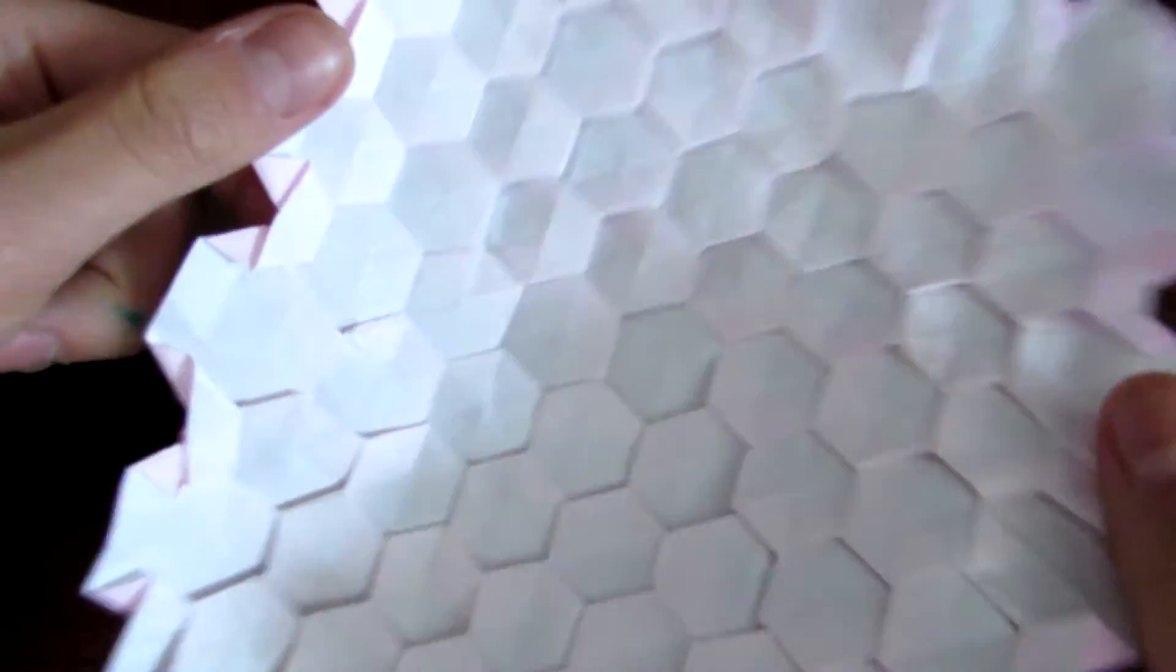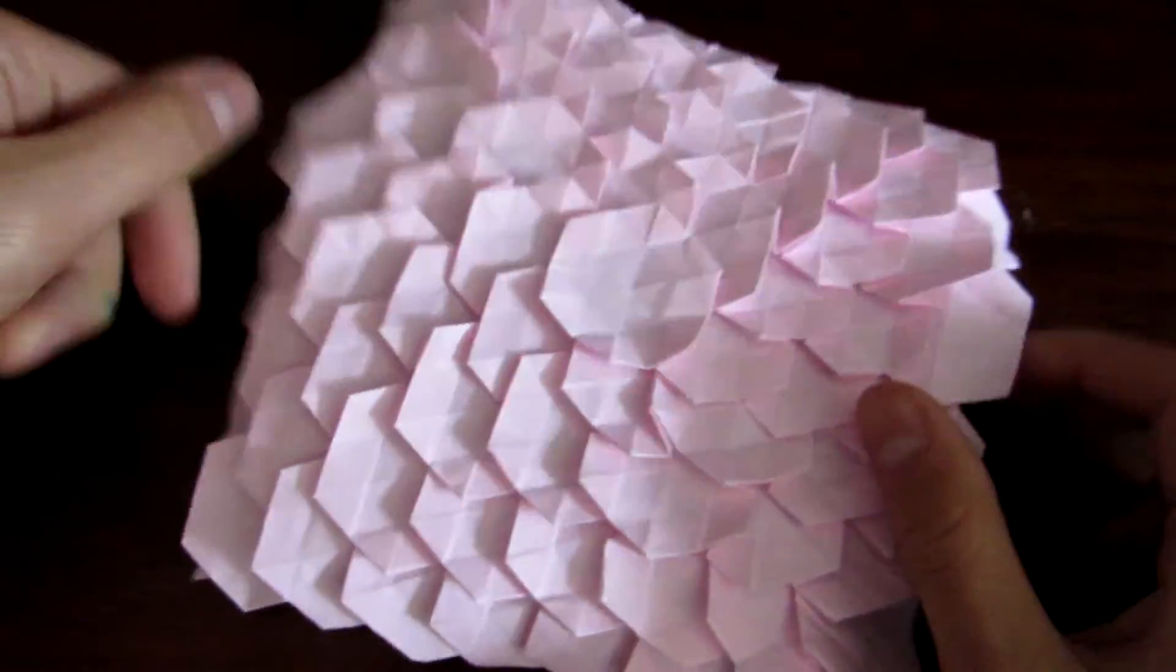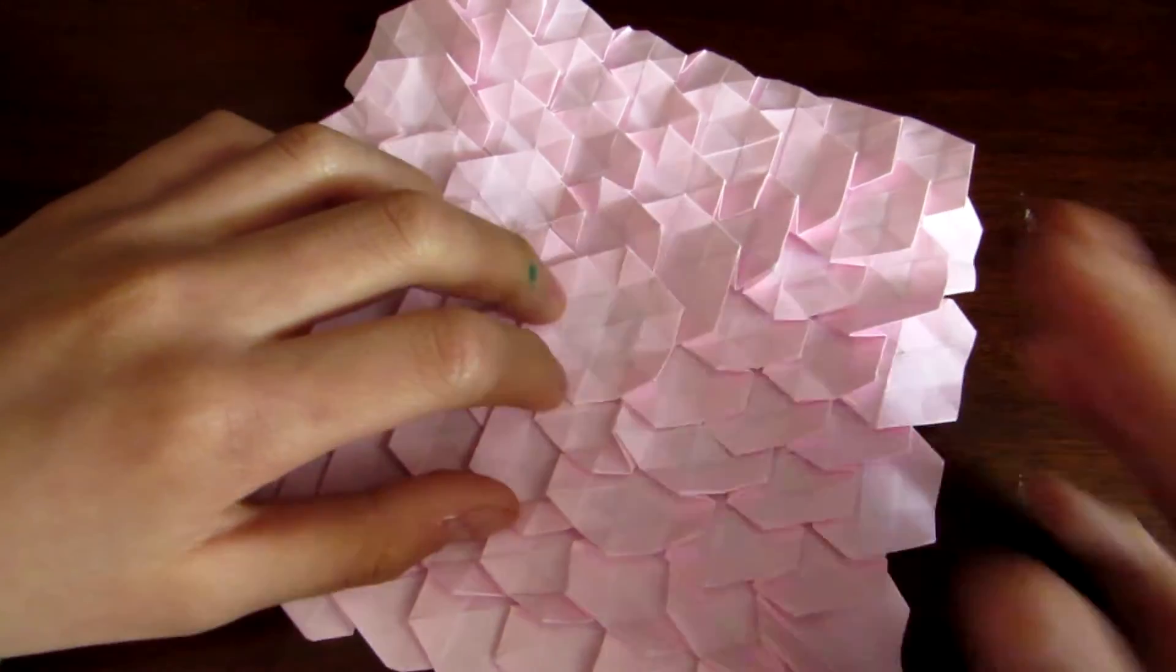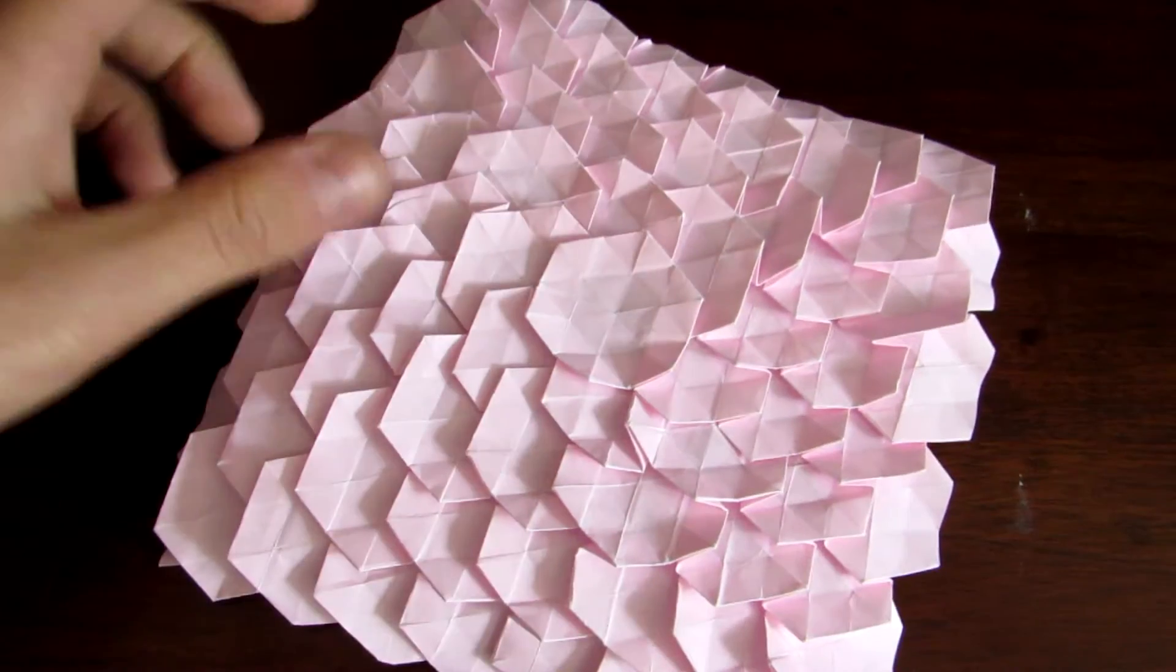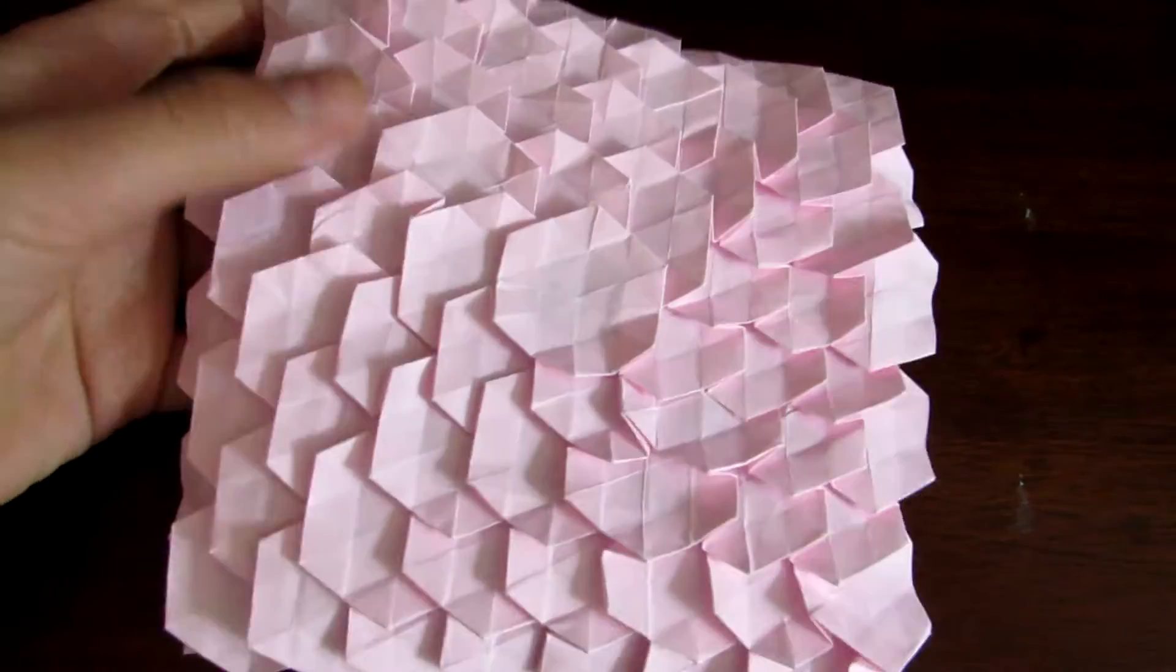Eric Gejerd, the story behind this model is that he was actually trying to fold fish scales, but he accidentally ended up folding overlapping hexagons, like this.